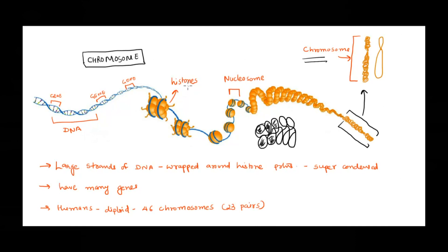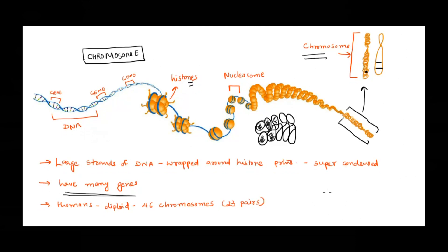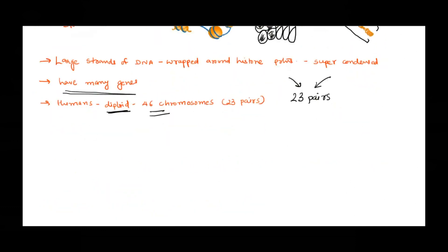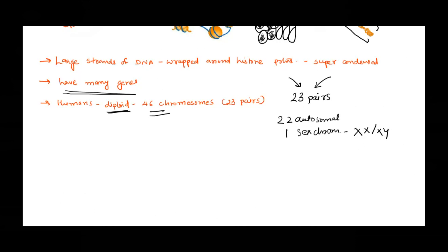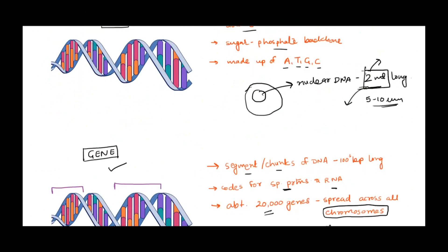We are familiar with this structure — it is nothing but the super-condensed form of DNA where it is wrapped around histone proteins. Now in humans, we have 46 chromosomes because we are a diploid organism. We have one set of chromosomes that comes from the mother and one set that comes from the father, so we have 23 pairs of chromosomes. Out of these 23 pairs, we have 22 autosomal chromosomes and one pair of sex chromosomes, which can be either XX or XY.